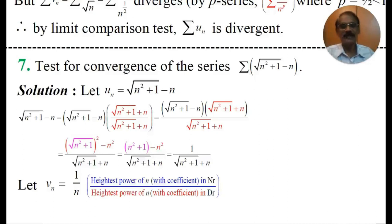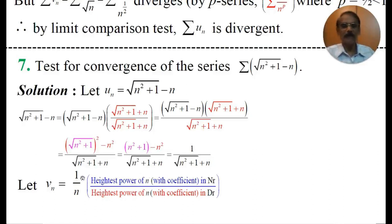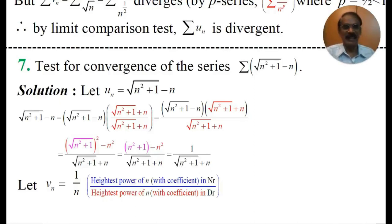To choose vn, use the shortcut: highest power of n in numerator over denominator of un. In the numerator it is 1. In the denominator, the highest power of n is n, since √(n²) equals n. Therefore, vn equals 1 by n.